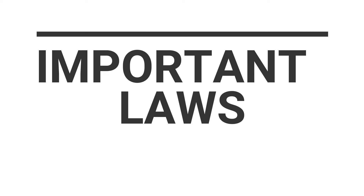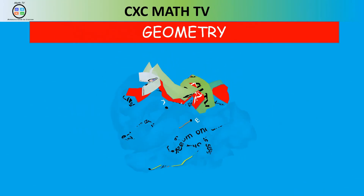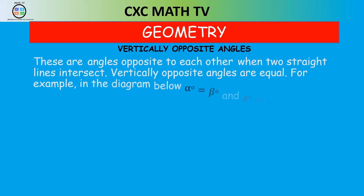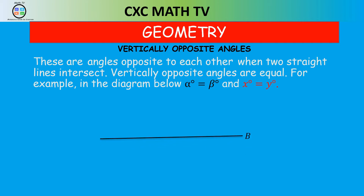There are some laws that will help us find missing angles — this is an important topic in geometry. The first law is vertically opposite angles. When two straight lines intersect, vertically opposite angles are equal. Looking at lines SR and AB intersecting at a point, angle x equals angle y and angle alpha equals angle beta by vertically opposite angles.